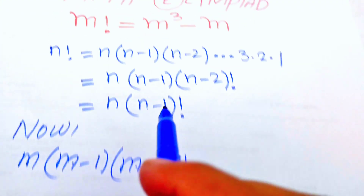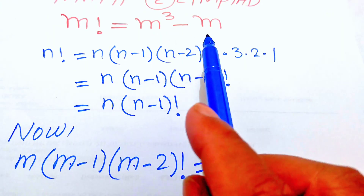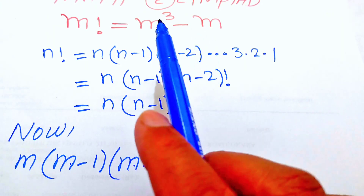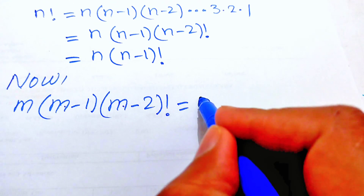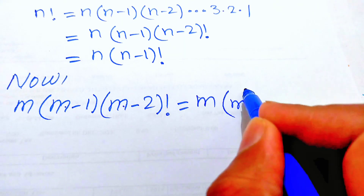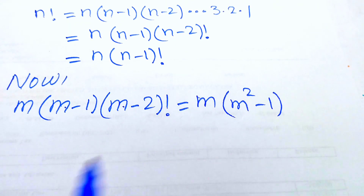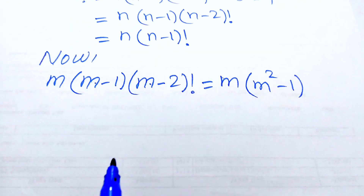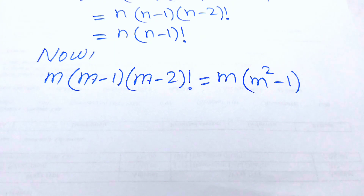On the right-hand side we have m cubed minus m. We take out common factor m, which gives m times (m squared minus 1). Now we focus on both sides.